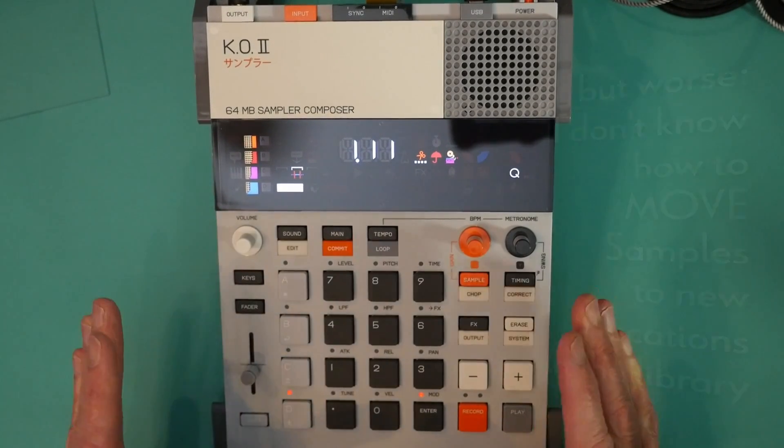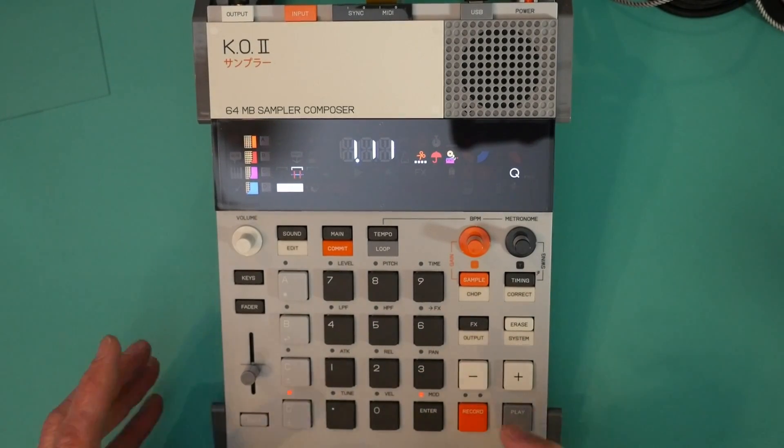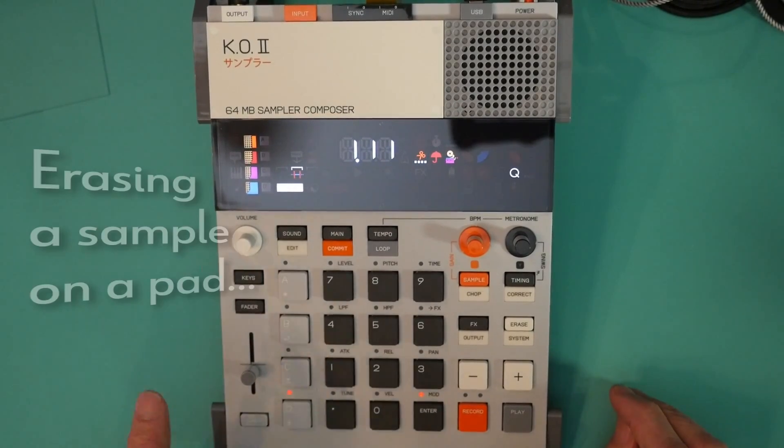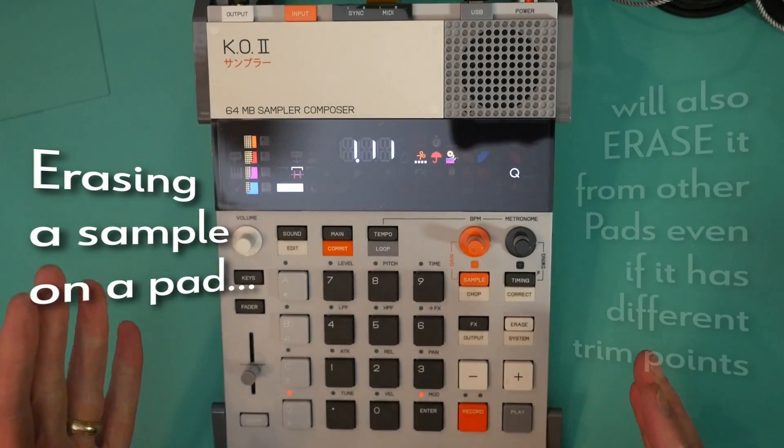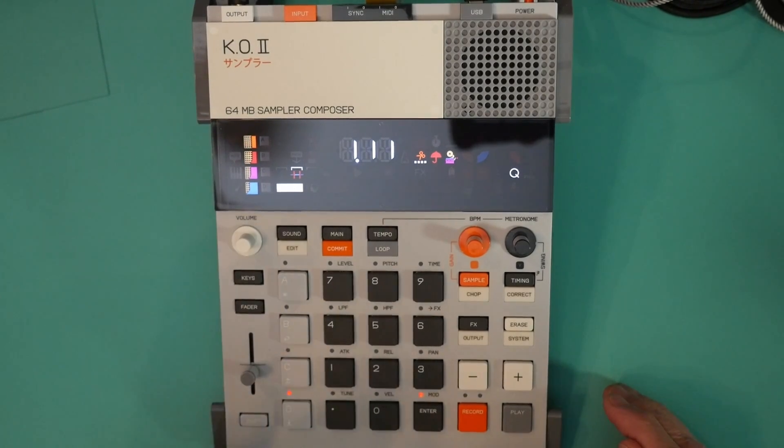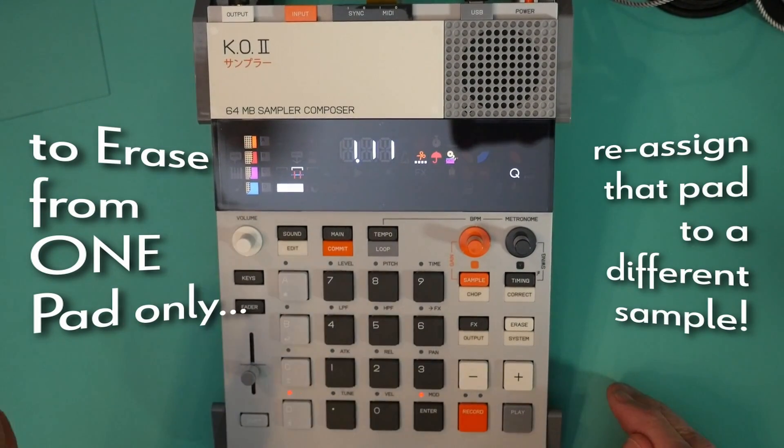Now remember, when you chop a sample like I did, you're virtually putting the same sound or sample on all the pads in that group with different start and end points on the trim settings. Now this implies that if you erase the sound on any one of those pads, you've actually erased it from all the pads because you're erasing the sound from the project. To erase just one pad's trim of the same sample, reassign that pad to another sound. That's the best way to do it.